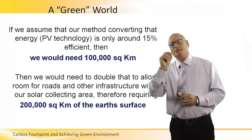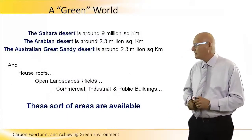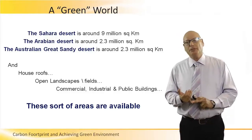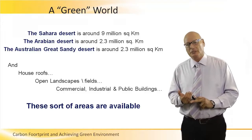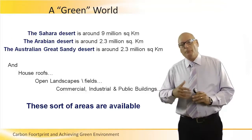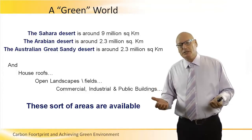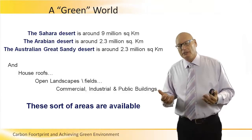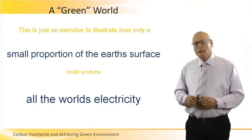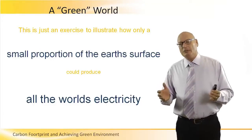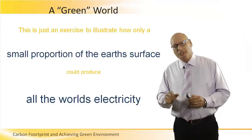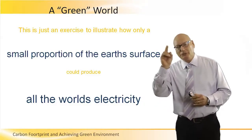To put 200,000 square kilometers in perspective: the Sahara Desert is around 9 million square kilometers, the Arabian Desert around 2.3 million, and the Australian Great Sandy Desert around 2.3 million square kilometers. There are also house roofs, open landscapes, fields, and commercial and industrial buildings available. This was just an exercise to illustrate how only a small proportion of Earth's surface could produce all the world's electricity in the year 2030 — and even beyond.